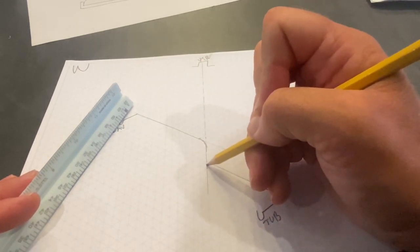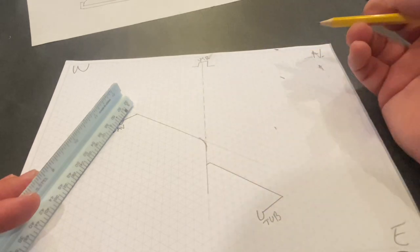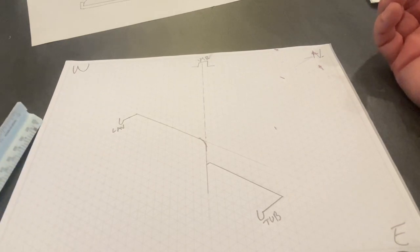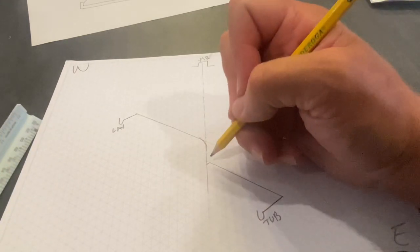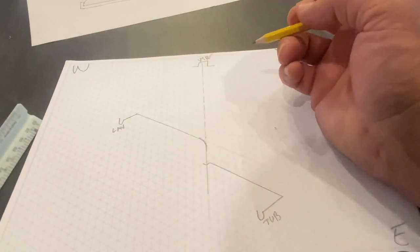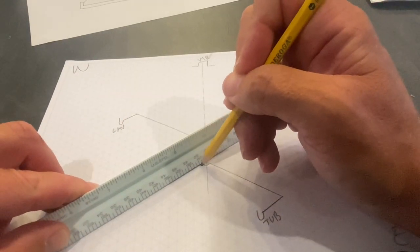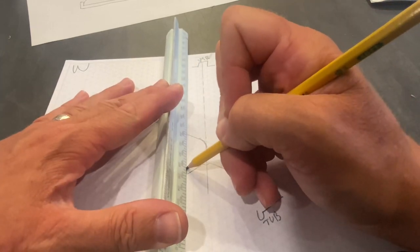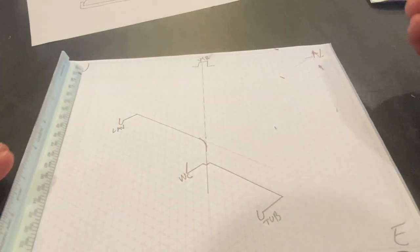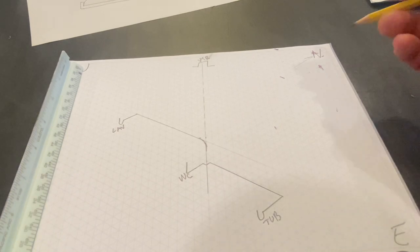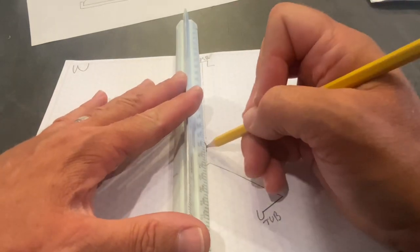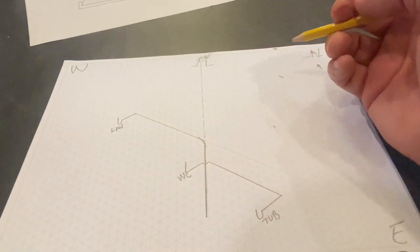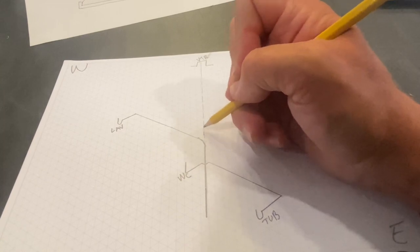And then we're going to go like this and we're going to call that tub. And put a little thingamajiggy right there because that's direction of flow. So far so good, excellent. Now there's only one more piece left and that's our water closet. Our water closet, somewhat similar, just like that. And let's come out like this and come up just like that and mark this water closet.